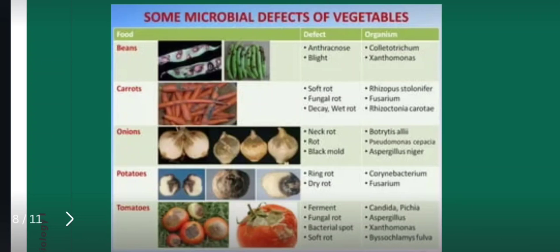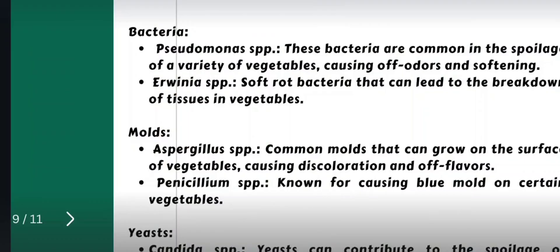The majority of vegetables are susceptible to fungal infections, and along with fungi there are various bacteria such as Xanthomonas species, which are reported to be a major cause of vegetable spoilage. Here is a list of microorganisms — for example, Pseudomonas species, which are reported to cause food spoilage or vegetable spoilage.